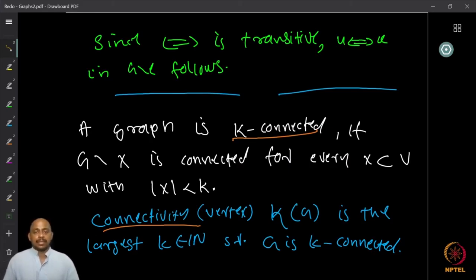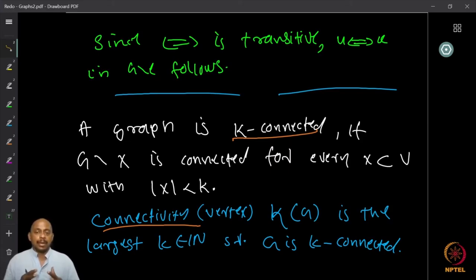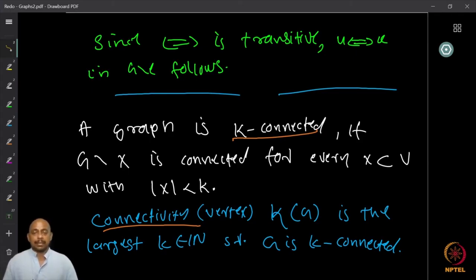A graph G is defined to be K-connected if I cannot remove fewer than K vertices to disconnect the graph. That is, starting with a connected graph G, if I must remove at least K vertices to make the graph disconnected, then the graph is said to be K-connected.